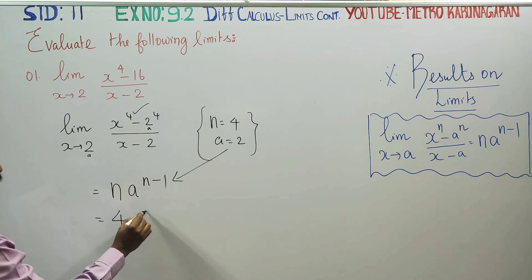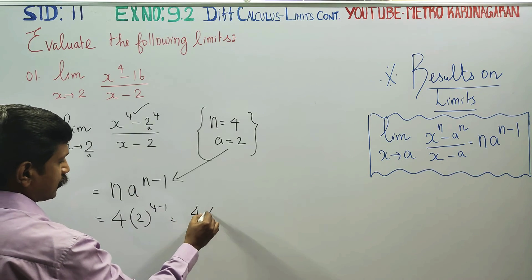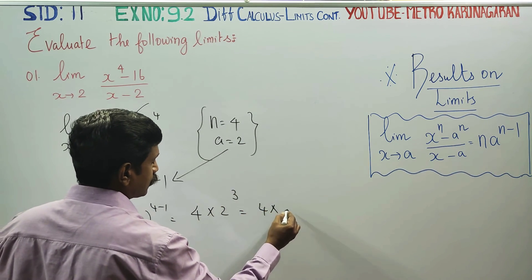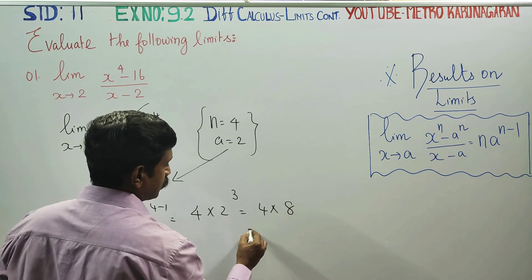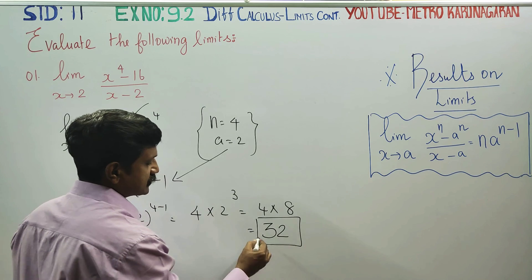4 into 2 to the power 4 minus 1, 4 into 2 to the power 3, 2 into 2 into 2, 2 to the 4, 4 to the 8, 4 times 8, 32 is your answer for this sum.